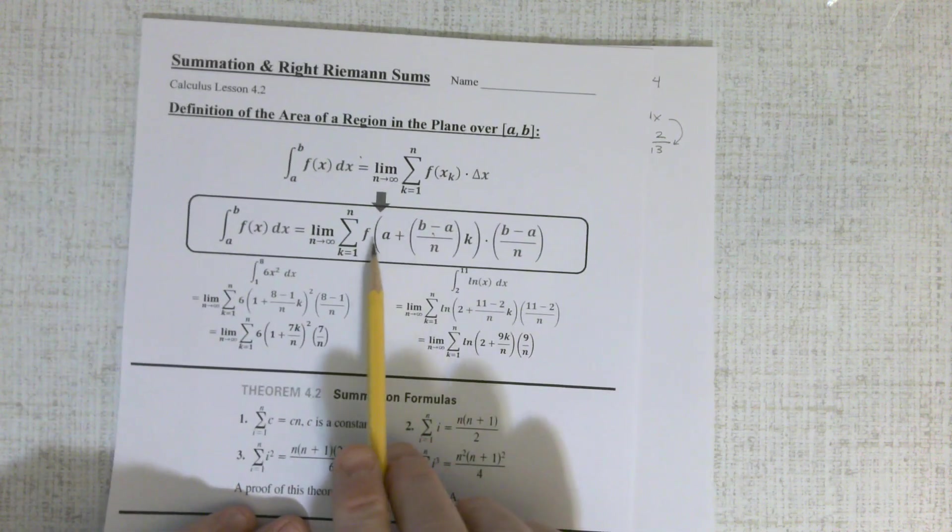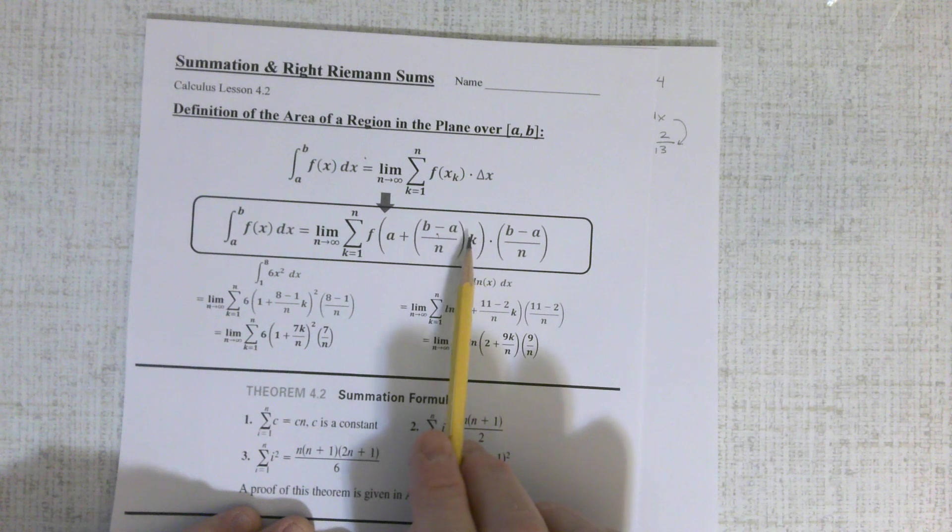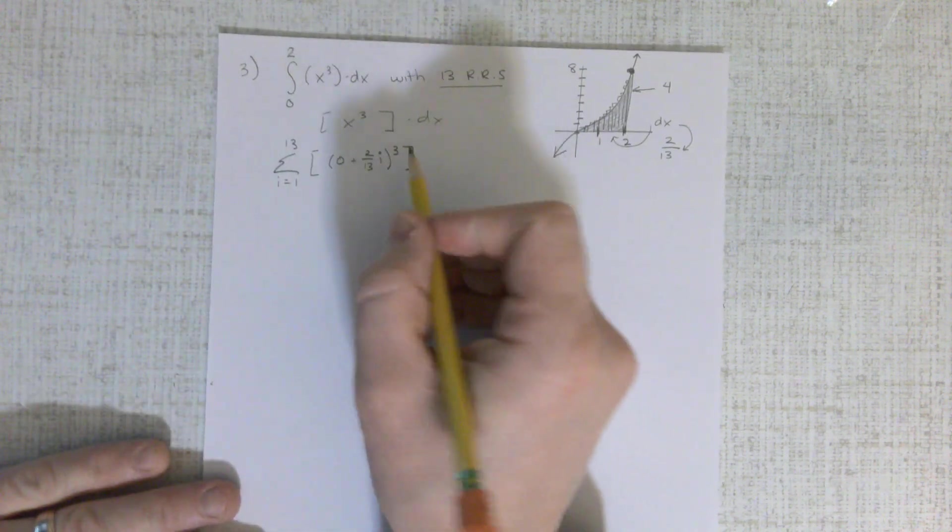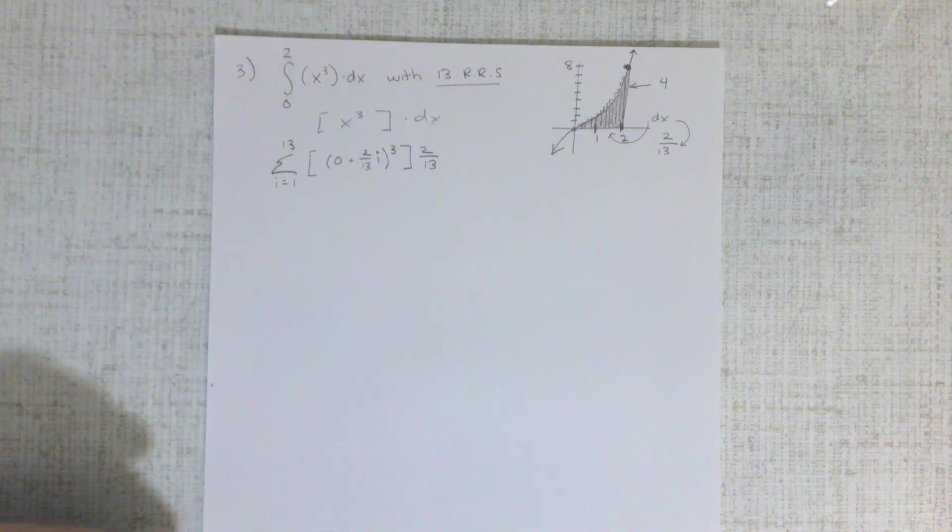and that comes from right here where it's a plus the delta k. In this one, it's k. We usually use i most of the time. And then times my delta x is 2 thirteenths. Now it's done. It's written as a summation.